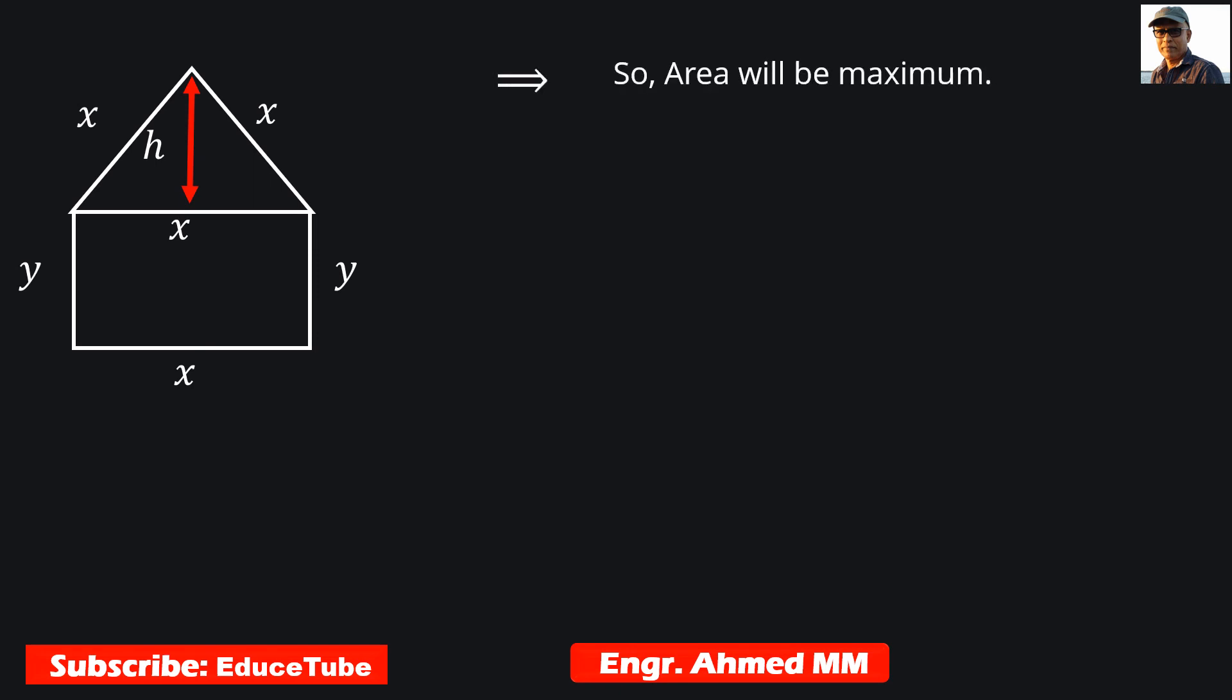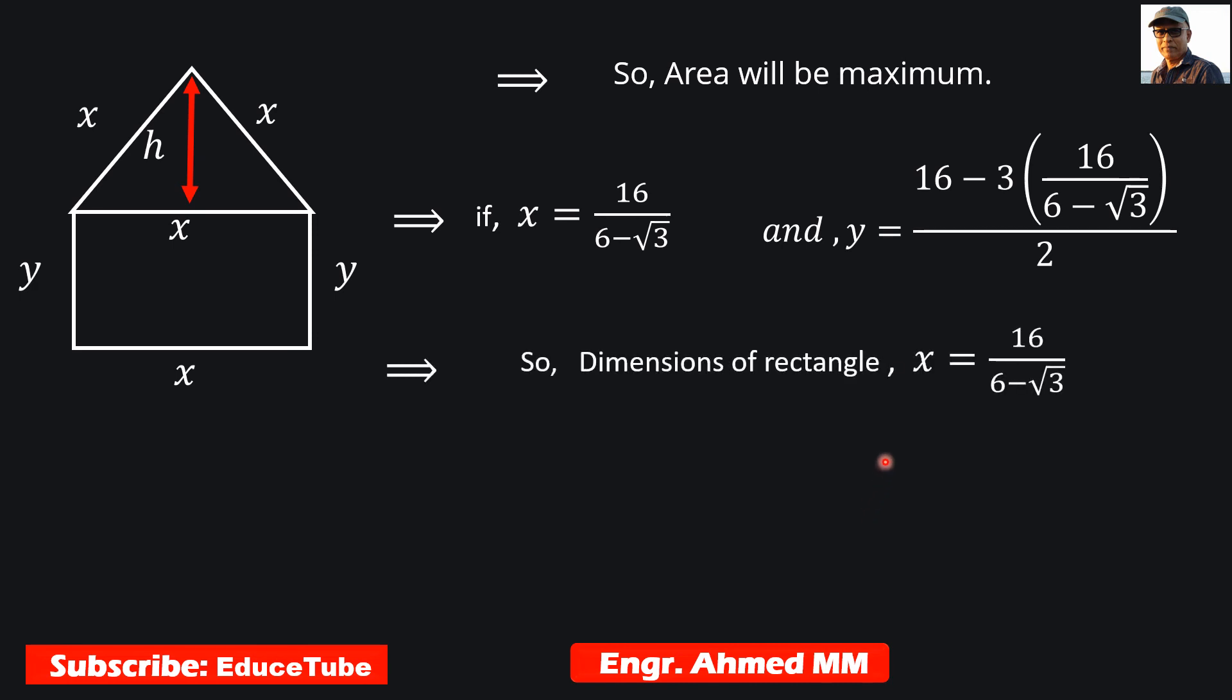So area will be maximum. We need to get two dimensions: number one is x, number two is y. In a more refined way, we can write the dimensions of the rectangle. X will be this as it is, and y will be more refined in this way. So we got x and y, both dimensions, and our area will be maximum with these two dimensions. So I think we are done with this problem.